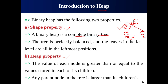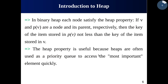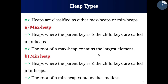The parent being greater is not the only possible case. Sometimes we need the value stored at the parent to be less than the child. So we can divide heaps into two types: max heaps and min heaps.